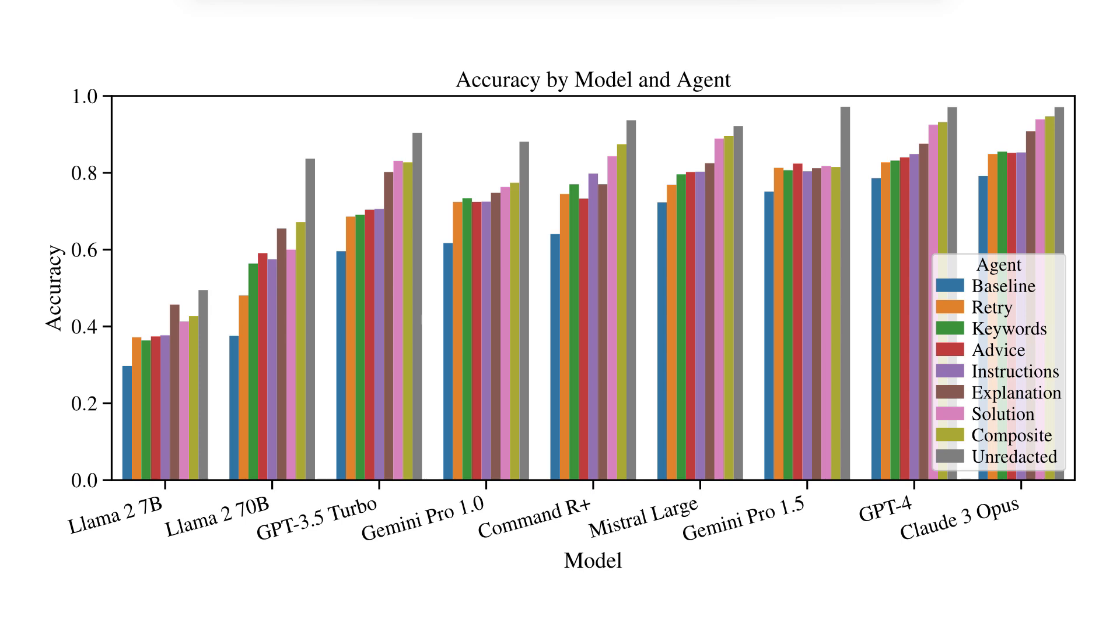To further support our findings, we also compared accuracy by model and agent. For all LLMs, we saw a statistically significant increase in accuracy for all self-reflection types compared to the non-reflecting baseline. In addition, we saw a similar general trend of increasing correct answer accuracy as a function of the amount of information the self-reflection contained.